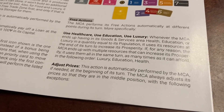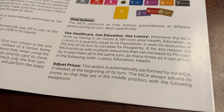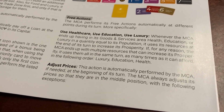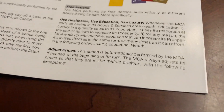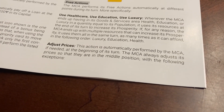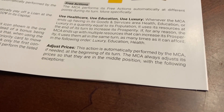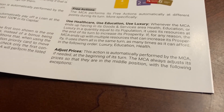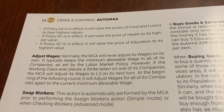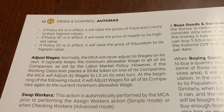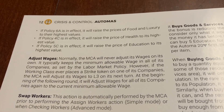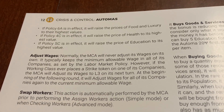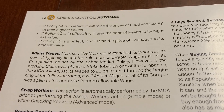For using healthcare, education, and luxury, any time that the middle class can increase their prosperity and they have the money to do so, they will do so. Adjusting prices is automatically performed by the middle class Atoma at the beginning of its turn. They always adjust their prices to the middle position, with the following exceptions: when policy 6A is in effect, it will raise the prices of food and luxury to the highest values. If policy 4C is in effect, it will raise the price of health to its highest value. And if 5C is in effect, it will raise the price of education to its highest value.